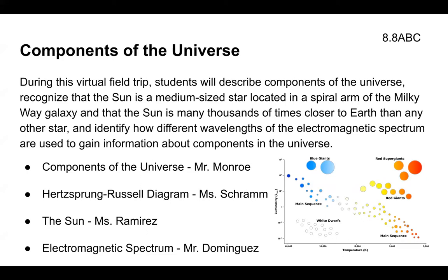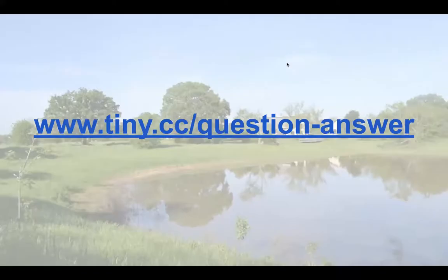We're going to start off by exploring some different components of the universe with Mr. Monroe. Next, we're going to look at the Hertzsprung-Russell diagram, also known as the HR diagram, with Ms. Schramm. Then we're going to explore the sun with Mr. Merez. And last but not least, we're going to explore the electromagnetic spectrum, also known as the EM spectrum, with Mr. Dominguez. If you have any questions, you can ask those at www.tiny.cc/question-answer. So let me turn things over to Mr. Monroe, who's going to get us started with components of the universe.